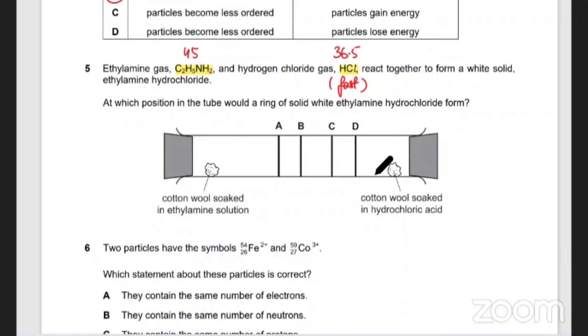So HCl fast, so HCl is starting to travel here and ethylamine traveling from the other side. Now remember, HCl will cover a larger distance because it is fast, so you're going to meet at A.